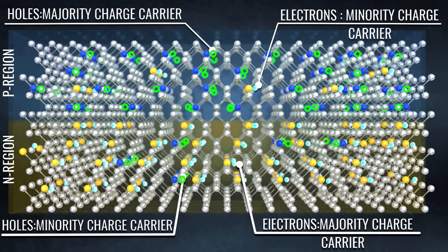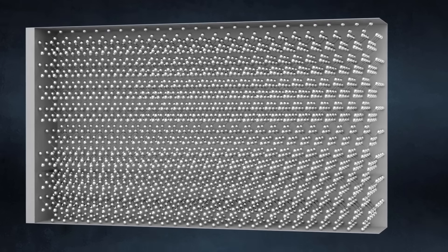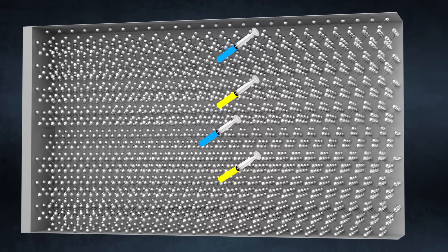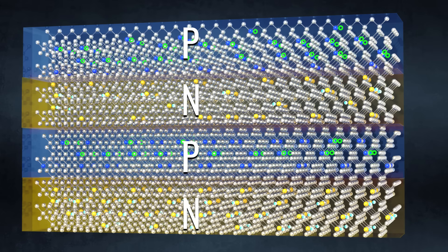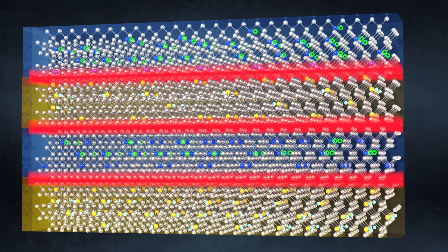With this basic knowledge, let us learn about the workings of the thyristor. If a silicon structure wafer is doped with four alternate forms of p- and n-types, a thyristor is born. Here also, the formation of depletion regions occurs at the junctions.